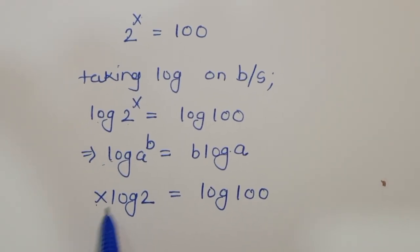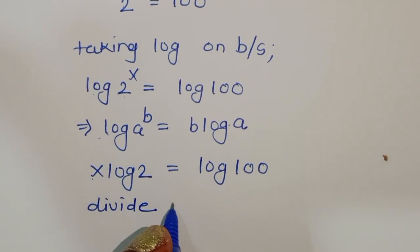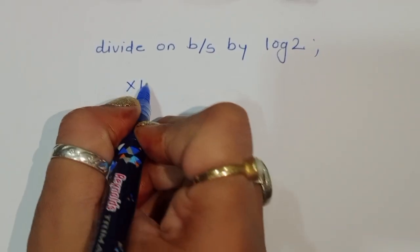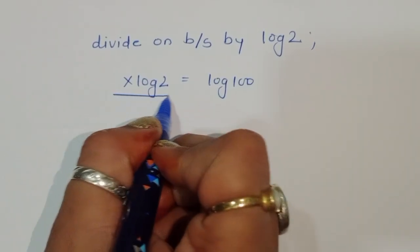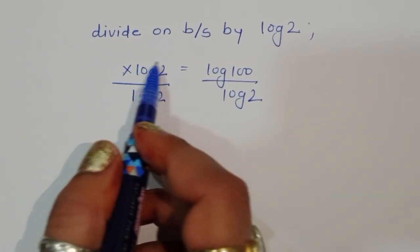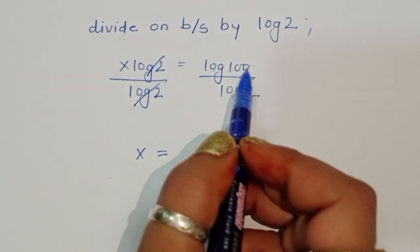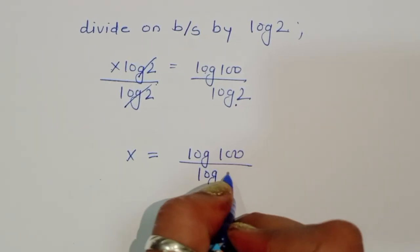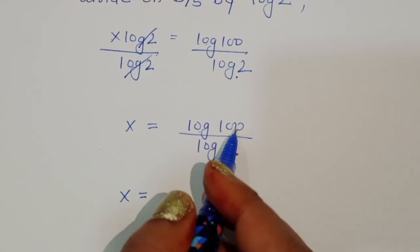To find x, we cancel log(2) by dividing both sides by log(2), giving x = log(100) / log(2). We can write log(100) in terms of multiplication, so log(100) = log(50 × 2).